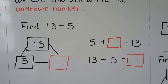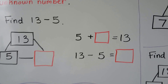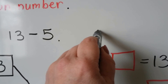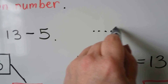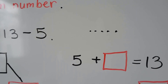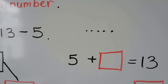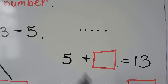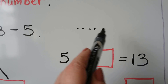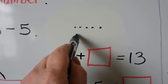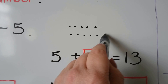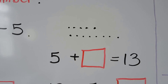We can use counters. We can make 5 dots, and then make more dots until we have 13. We have 5, 6, 7, 8, 9, 10, 11, 12, 13.